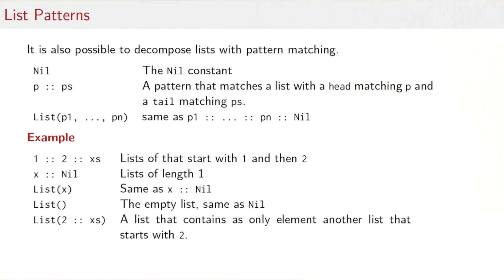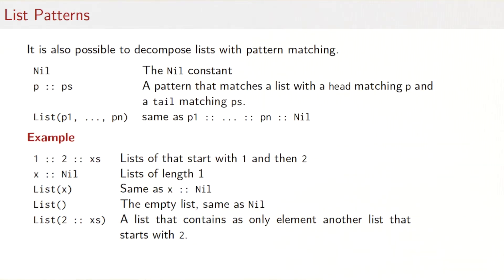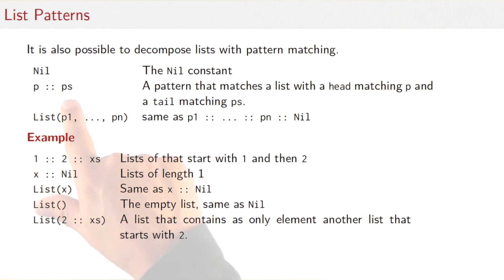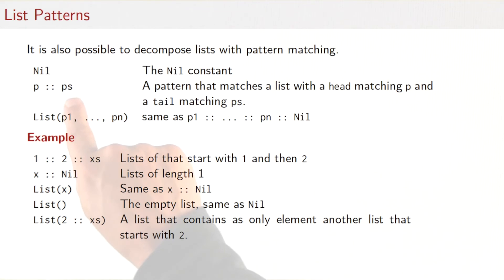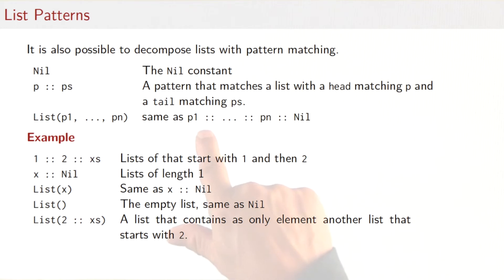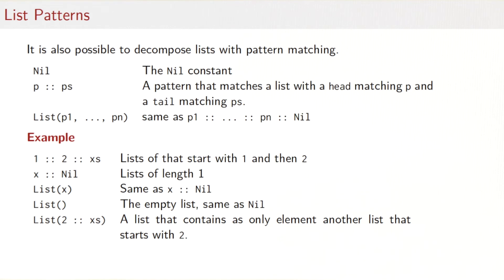It's also possible — and often preferred — to decompose lists with pattern matching. The patterns you can apply to lists mirror their construction methods. There is a Nil pattern corresponding to the nil constant, a cons pattern 'p :: ps' that matches any list whose head matches p and whose tail matches ps, and a shorthand 'List(p1, ..., pn)' which is equivalent to 'p1 :: p2 :: ... :: pn :: Nil'.